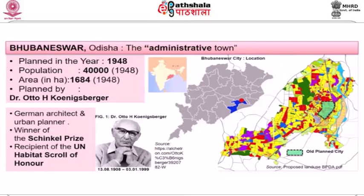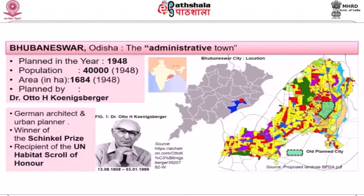Bhubaneswar is the administrative town and capital of the state, planned in the year 1948 for a population of 40,000 with an area of about 1,684 hectares. It was planned by Dr. Otto H. Koenigsberger, a German architect and urban planner, winner of the Schinkel Prize and recipient of the UN Habitat Scroll of Honor — a very eminent and respected architect and planner.